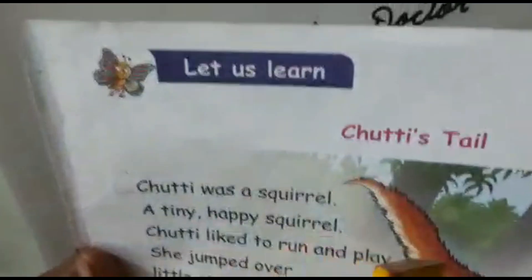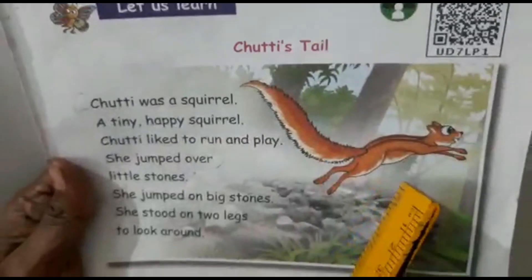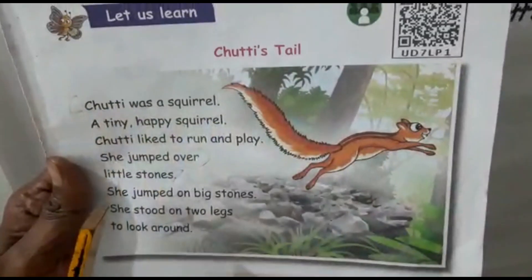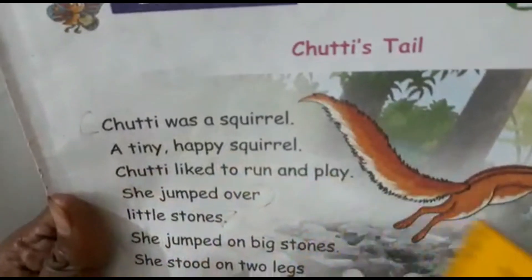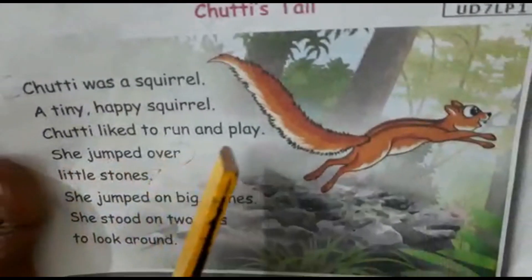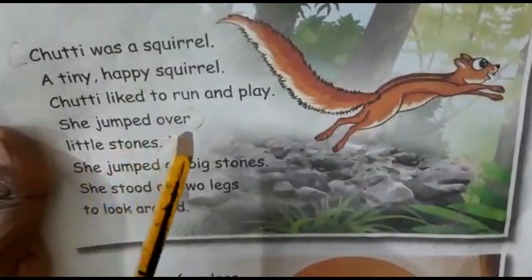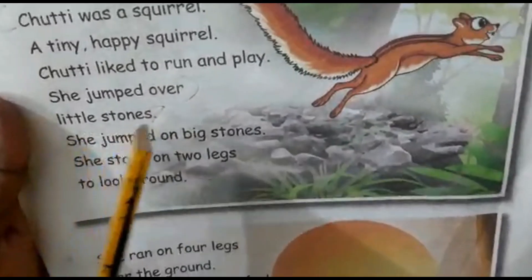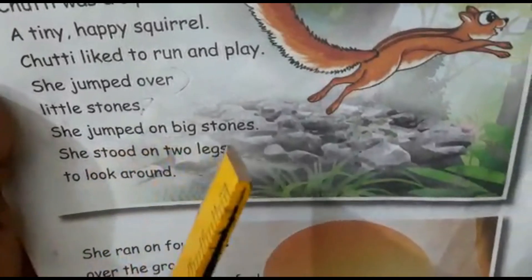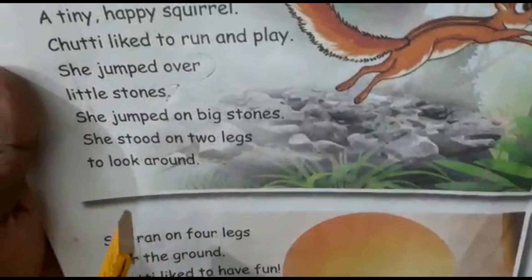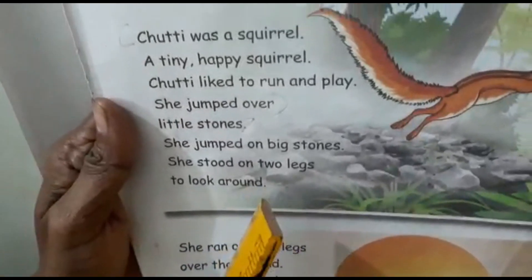You can see the lesson: Chutti's Tail. We are going to read Chutti's Tail. Chutti is a squirrel — a squirrel's name is Chutti. Chutti was a tiny happy squirrel. It's very happy. Chutti likes to run and play. She jumped over little stones, she jumped on big stones, she stood on two legs and looked around.